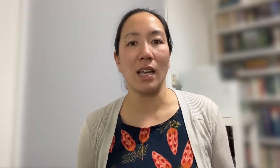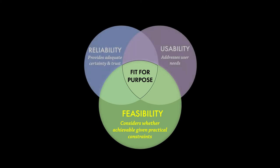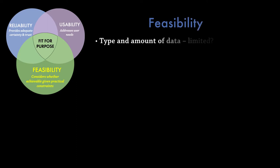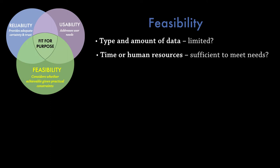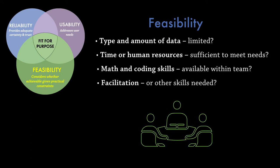The practical constraints are more straightforward to identify. This includes identifying the data and knowledge accessible, the time constraints and skills required. Constraints may also include the type and data available — are they limiting? Human resources available can also be a factor in selecting a modelling approach, as can the math and coding skills within the team. Facilitation or other skills may be more important for participatory modelling, if eliciting or sharing stakeholder perspectives is important.